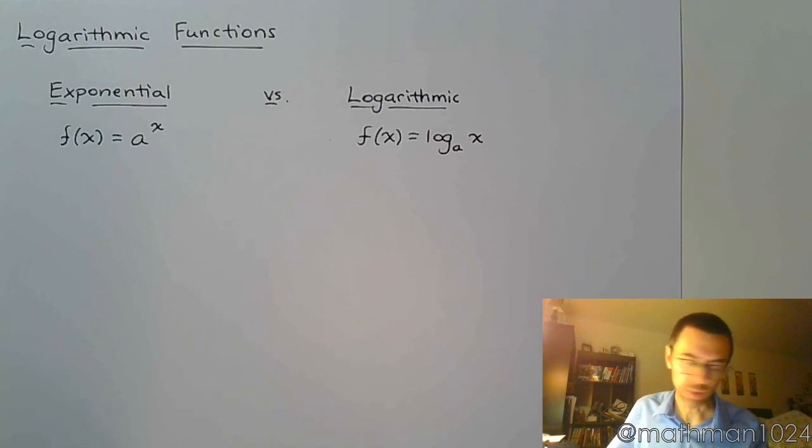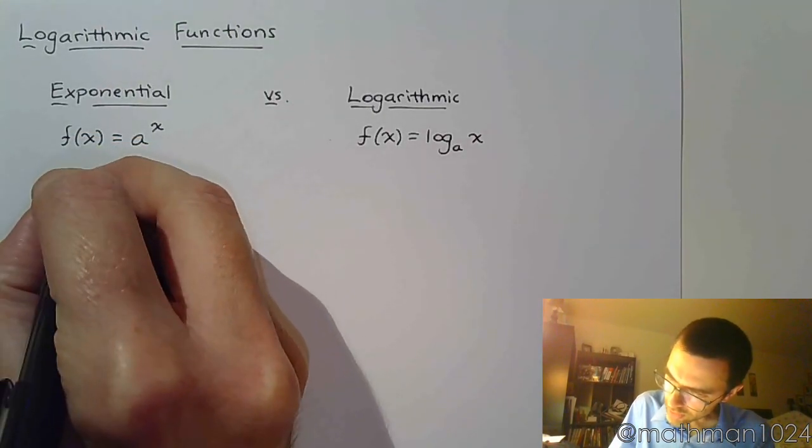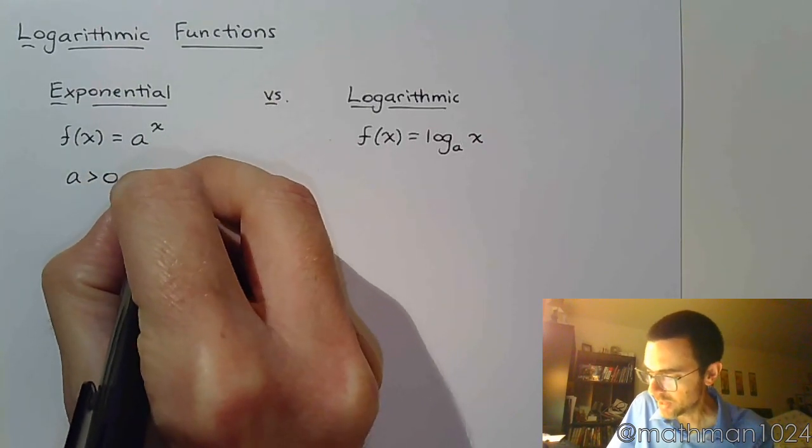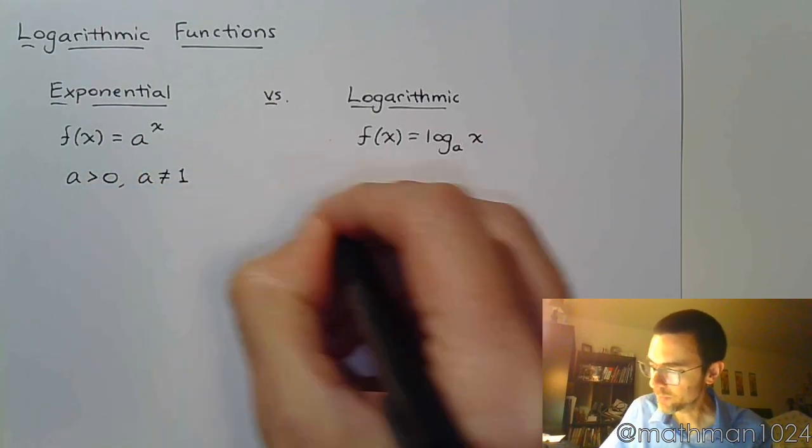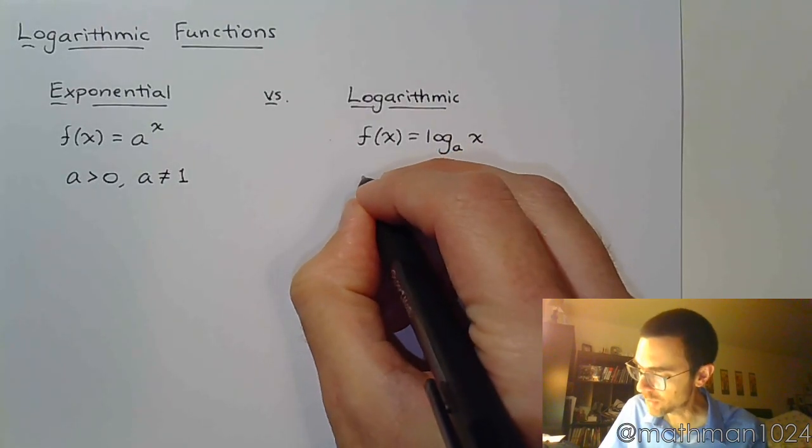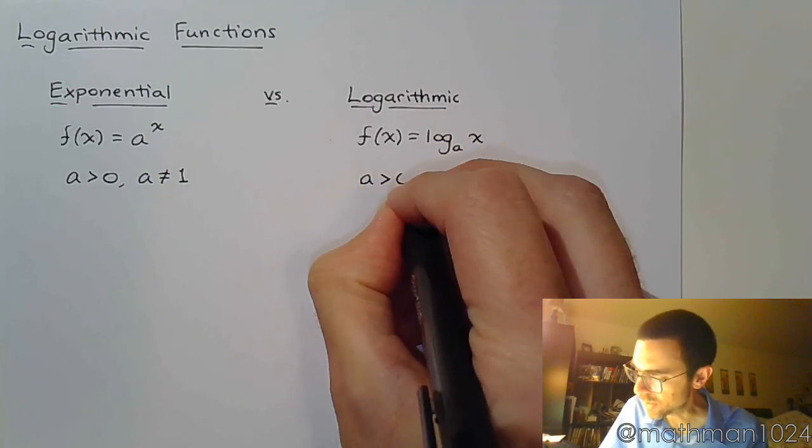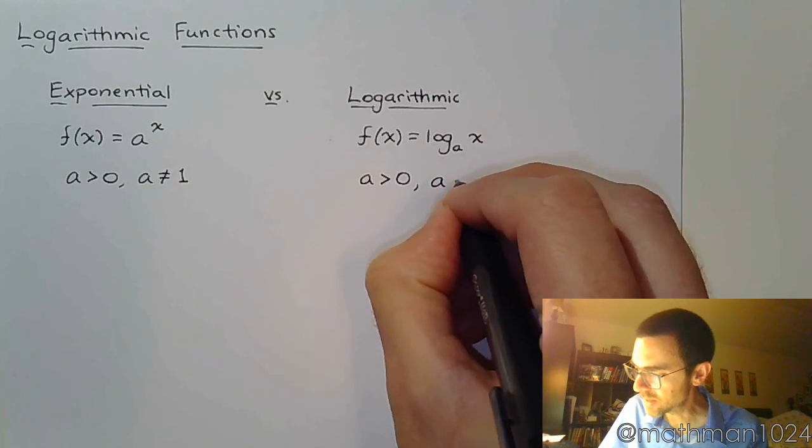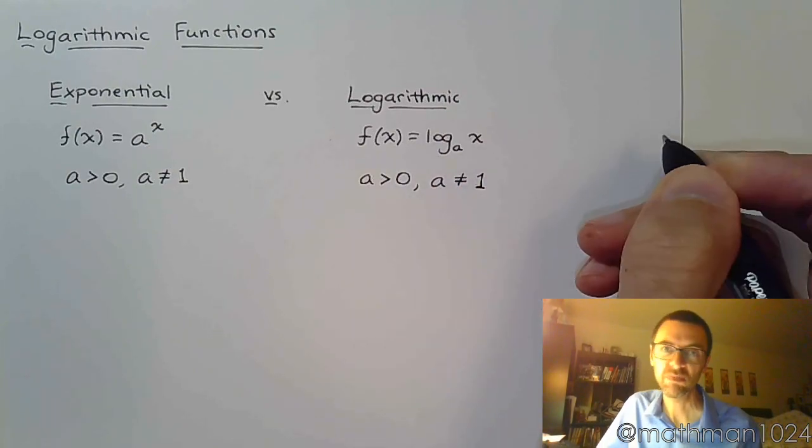For the exponential, we remember that the base has to be positive, and the base cannot equal one. And that's the same thing for the logarithm. The base of the logarithm has to be positive, and it cannot equal one.